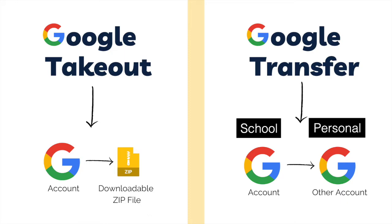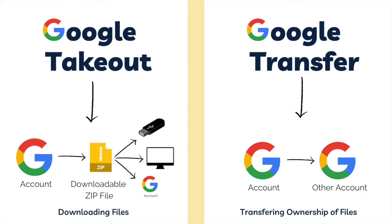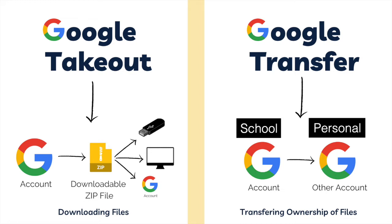You might be thinking: why would I transfer it over to a second account? Can I just keep my original account? Not always. Once you're no longer employed by a school or no longer a student there, they're more than likely going to deactivate or delete your account. So you want to get all that information out of there before that happens. Google Takeout downloads files into a zip file which you can put on a USB drive, your computer, or upload into another Google account. Whereas Google Transfer transfers ownership of the files from your original Google account to another Google account, without having to manually re-upload all of the files.